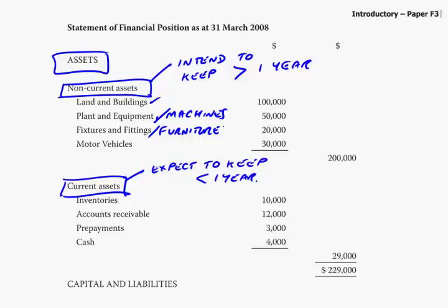Under current assets, these are items that keep changing. Inventories, for instance — clearly you'll buy goods for resale, but you don't intend to keep them that long; you're hoping to sell them, and the amount of your inventory will keep changing as you buy more and as you sell. Similarly, accounts receivable: people owe you money, they pay you, you sell more goods — the balance keeps changing, and you would normally expect to be paid within the year. Cash — the balance keeps changing; you're using your cash to buy goods, and as you sell them, you get more cash back.